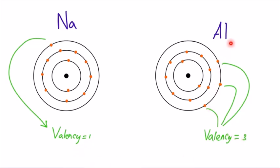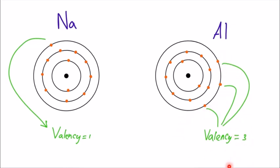For aluminium, in the first shell we have two electrons, in the second shell eight electrons, and in the last shell three electrons. Since three electrons make the shell incomplete, instead of taking five more electrons from another element, aluminium will give away its three electrons to someone else — and so the valency of aluminium becomes three. This is how we calculate valency.